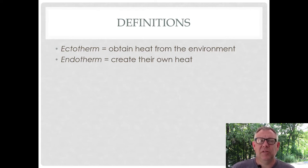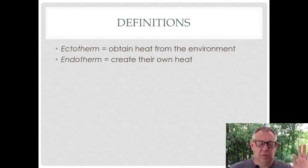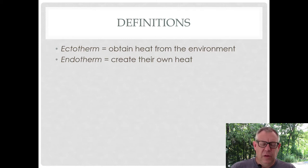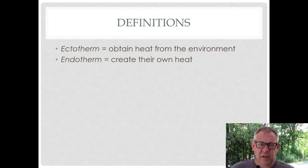A lot of times these terms are used interchangeably. You might say cold-blooded, poikilotherm, or ectotherm, or warm-blooded, homeotherm, endotherm. But they're not technically the same. Cold-blooded and warm-blooded are just common terms. But poikilotherm, homeotherm, ectotherm, endotherm — if you study these definitions, they have a slightly different meaning. The first has to do with whether your body temperature can vary or not, and the other two talk about where you get your temperature from. So I want you to be careful when you use these terms.